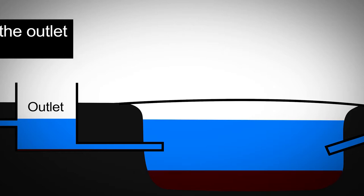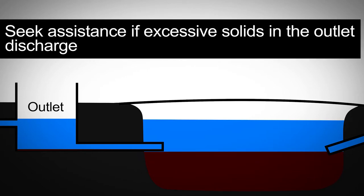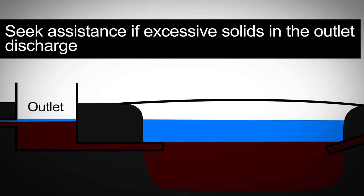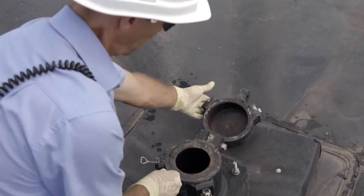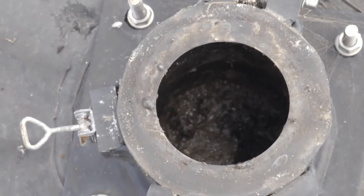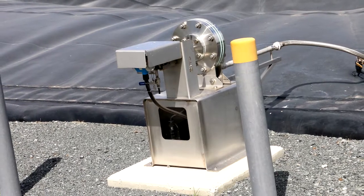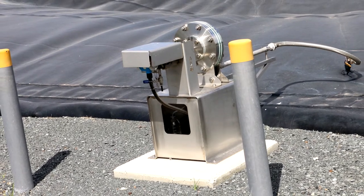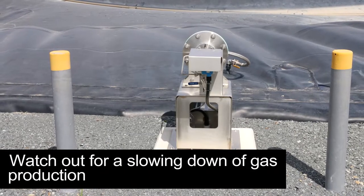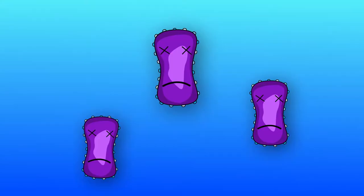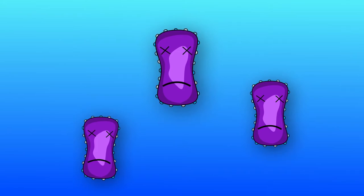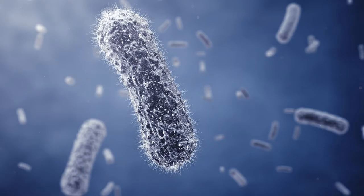Operators should also seek assistance if excessive solids build up in the outlet discharge, as this may indicate a sludge buildup in the pond. Covered anaerobic ponds are also vulnerable to foaming and excess solids in the effluent. Equipment to measure biogas flow, however, can provide valuable monitoring information. When gas production slows, or even stops, the anaerobic bacteria are either under extreme stress or have partially died off. Seek help immediately, as continued operation may cause more damage to the delicate bacterial population.